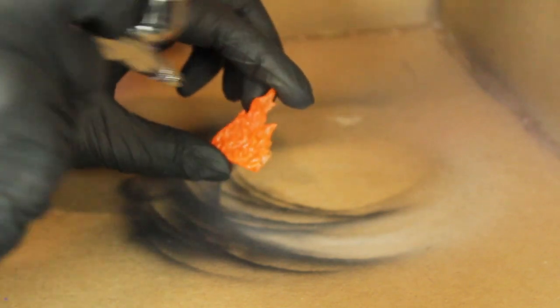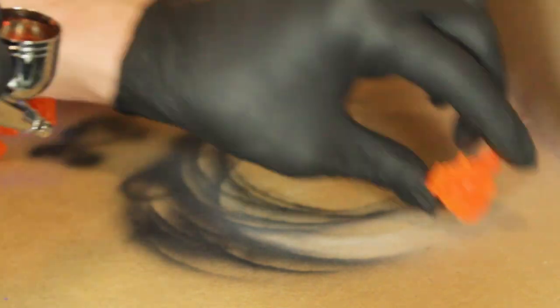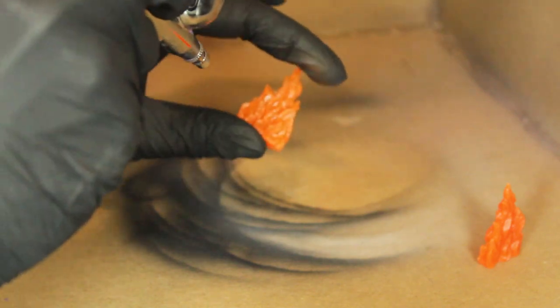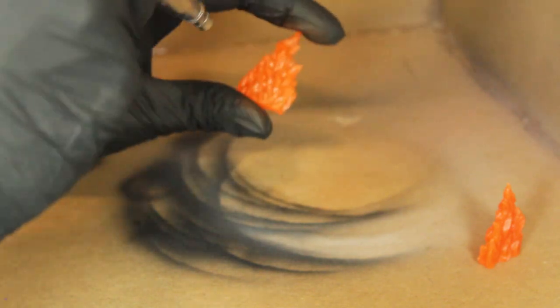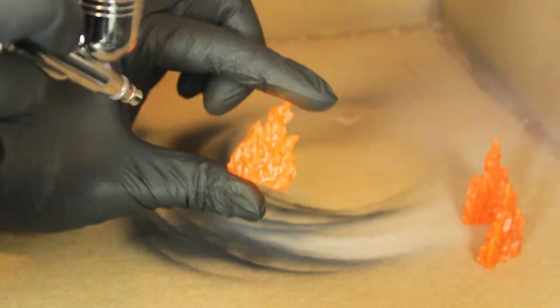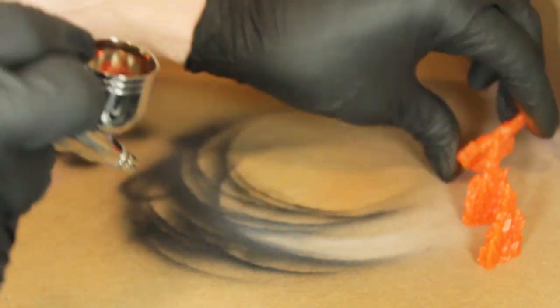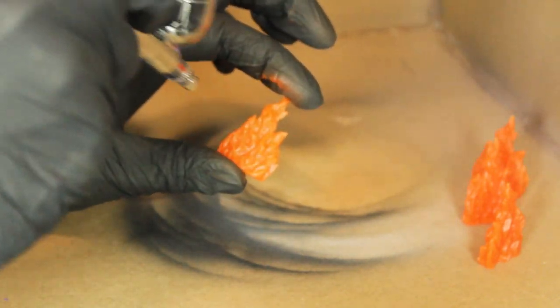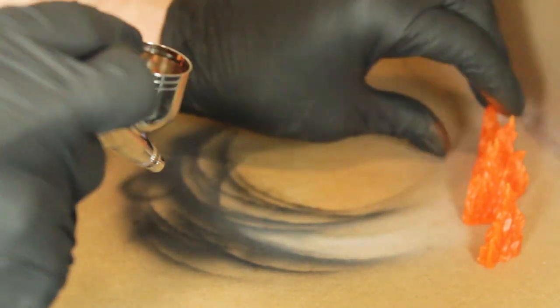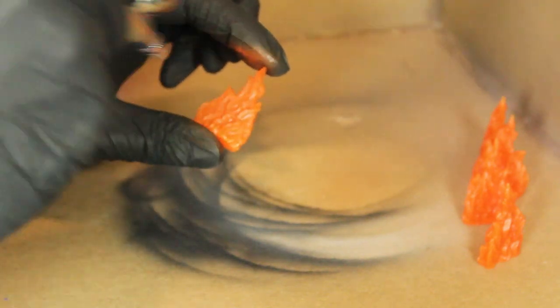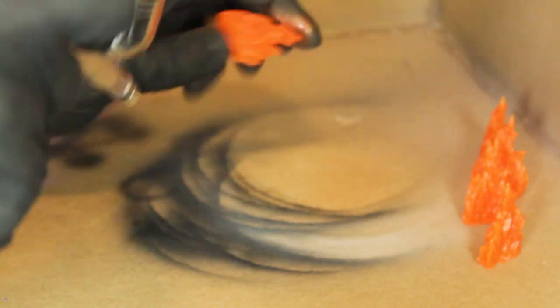So, just loading up the airbrush with the Phoenix red, I'm going to give a pretty generous coat to the whole thing. Not too heavy, because I don't want it to run. And the miniatures themselves are already orange, so you don't have to go too crazy here.